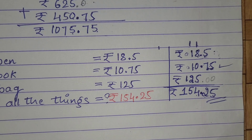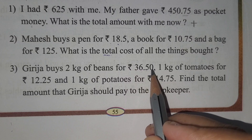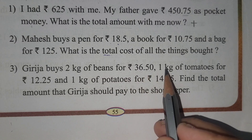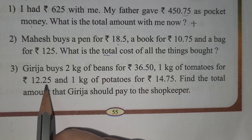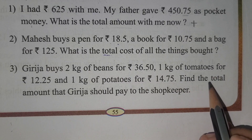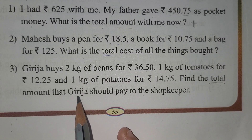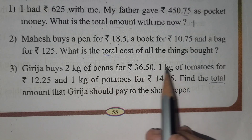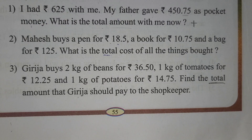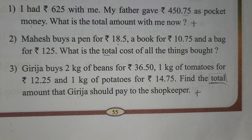Now let's move to the third one. Girija buys 2 kg of beans for 36 rupees 50 paise, and 1 kg of tomatoes for 12 rupees 25 paise, and 1 kg of potatoes for 14 rupees 75 paise. Now what you have to do — you have to find out the total amount that Girija should pay to the shopkeeper. She has bought 3 items: beans, tomatoes, and potatoes. We have to use addition because we need to find the total amount.